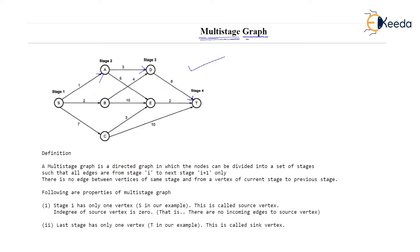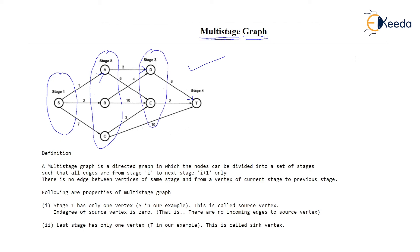Why don't we simply call it a weighted digraph? Because you can see that this graph can actually be partitioned. That is, the vertices of this graph — S, A, B, C and others — can be partitioned into various stages. As you can see, the stages have been shown as stage 1, stage 2, stage 3, and stage 4.